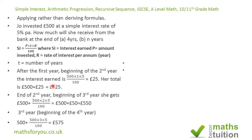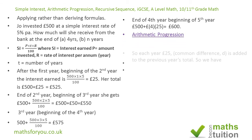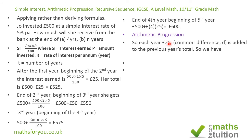Notice that as the years go by the amount increases by £25 each time — the difference between consecutive totals is always £25. It follows that at the end of the fourth year she receives £600. This £25 increase every year becomes the common difference in the arithmetic progression, so d = £25.